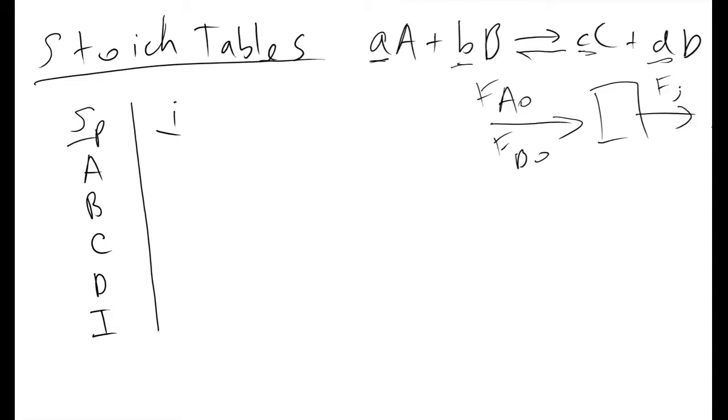In this diagram the initial term will be FA0 moles of A per second, FB0 moles of B per second coming in. We'll assume we have no products in our inlet stream and then we'll have some molar flow rate of our inerts called FI0.